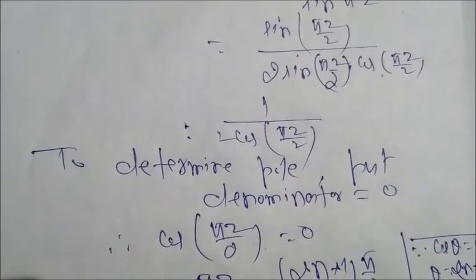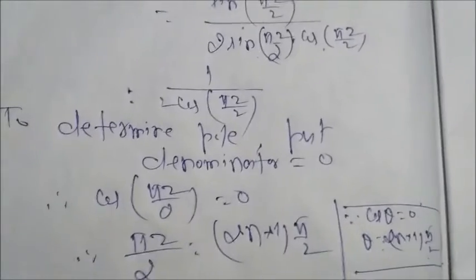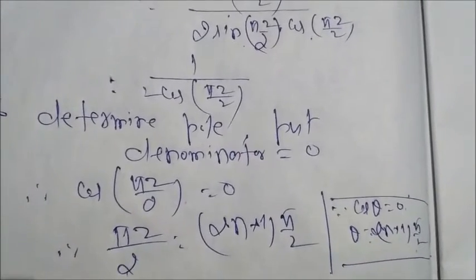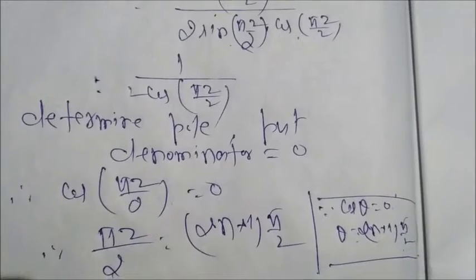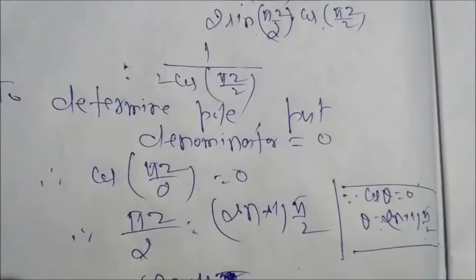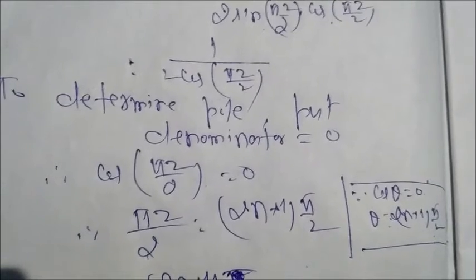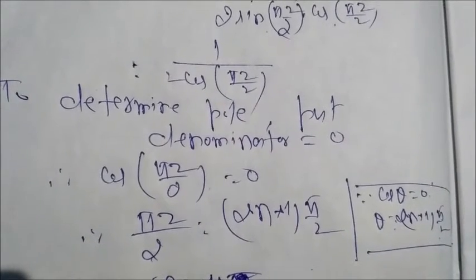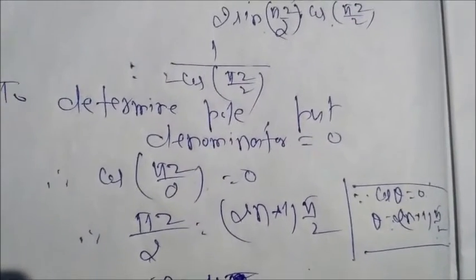We know from the formula if cos θ equals 0, then θ equals (2n+1)π/2. We will put it in the equation, then we will get πz/2 equals (2n+1)π/2.